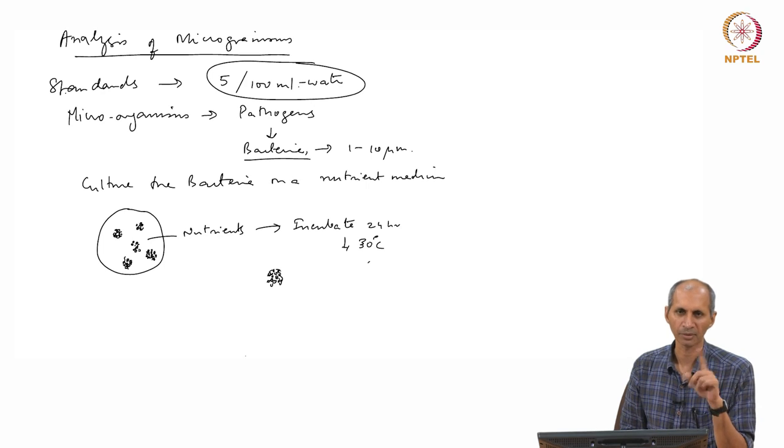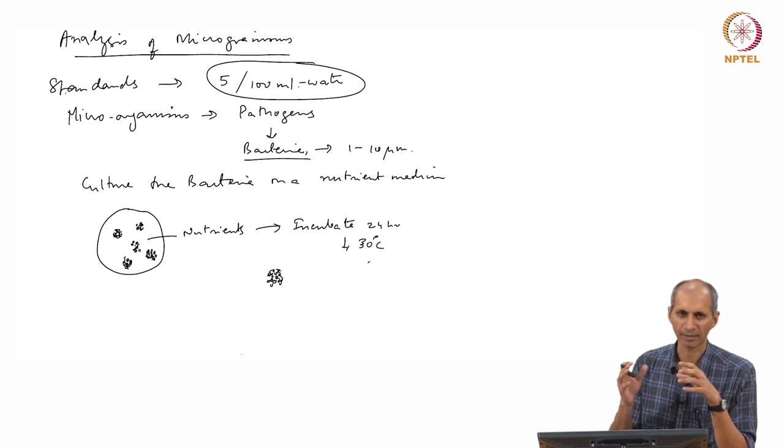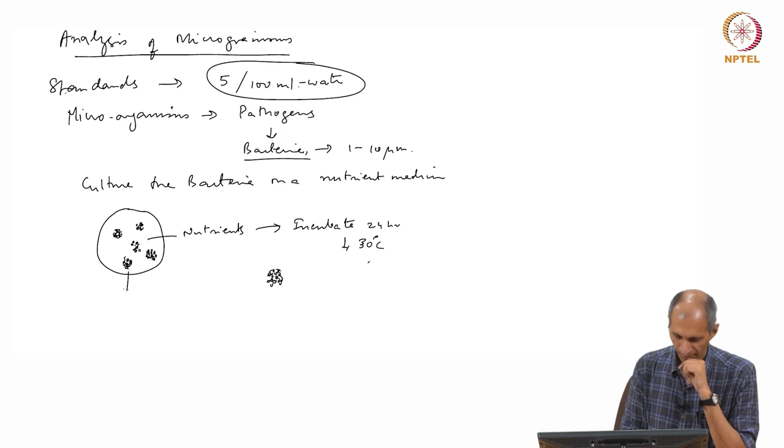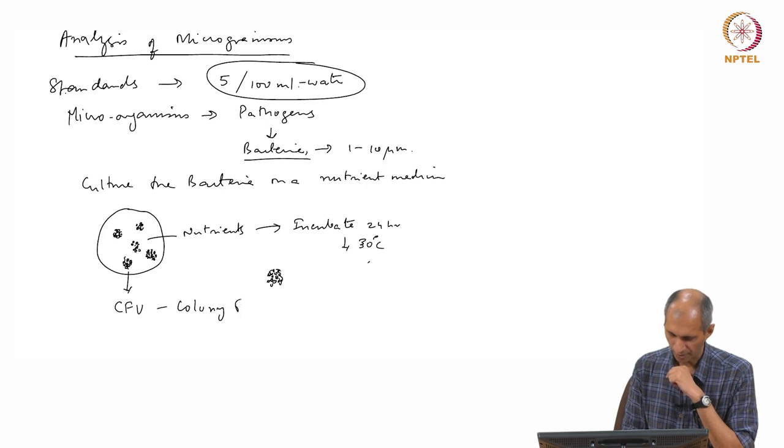One bacterial cell will multiply to 2, 4, 6, 8 - it multiplies and whatever was this one single dot which you cannot see now has become a colony. The premise is that you have formation of a colony from each bacteria. This is called as CFU or a colony forming unit.